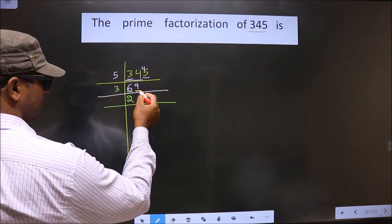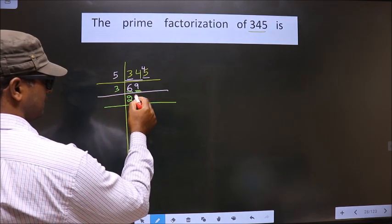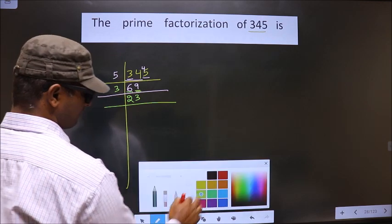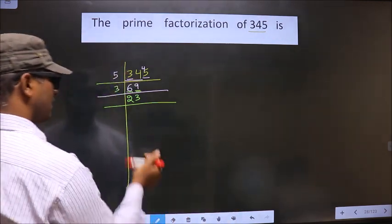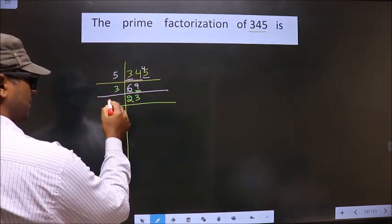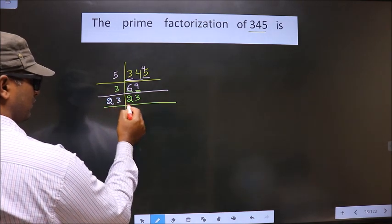Next number is 9. When do you get 9 in the 3 table? 3×3=9. Now, 23 is a prime number, so we should take 23 only.